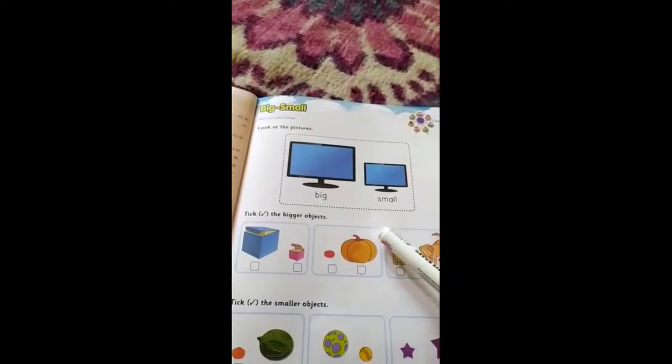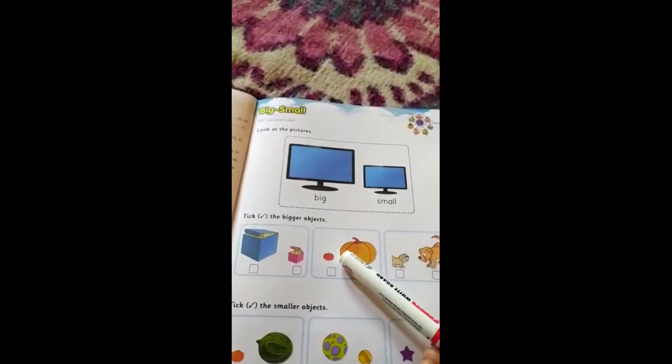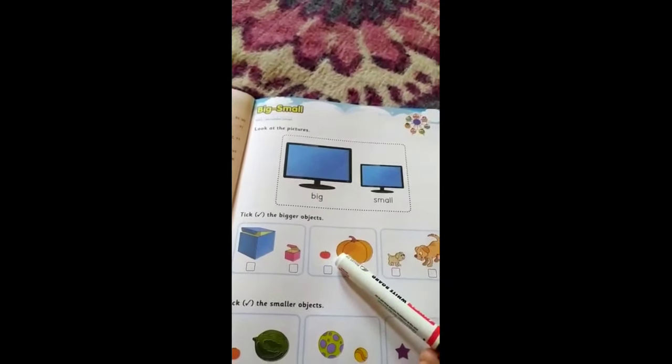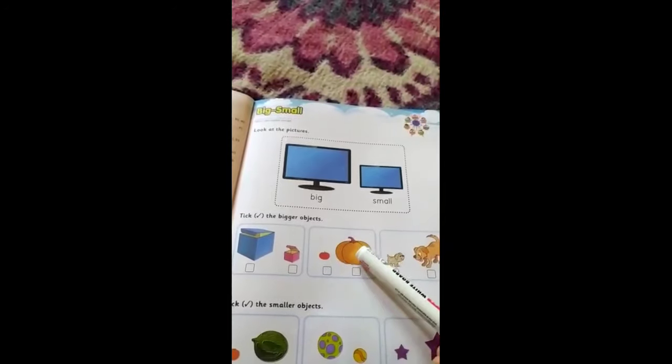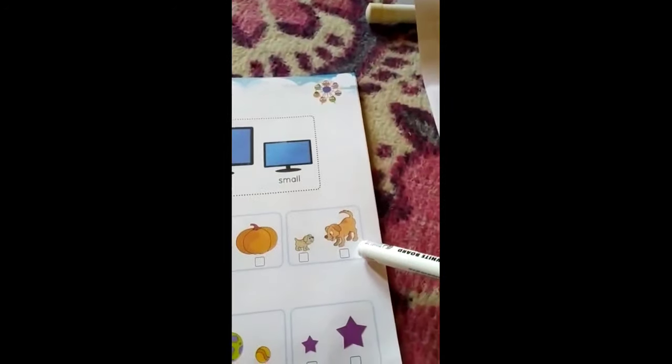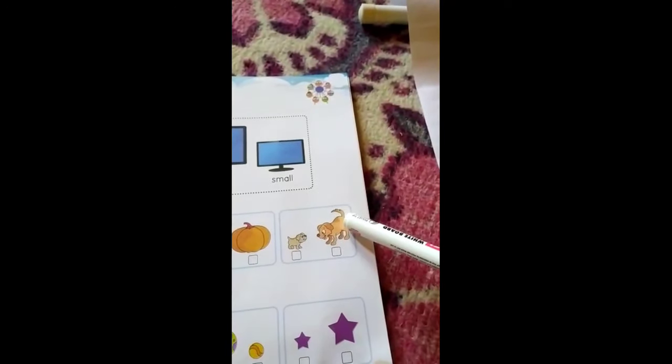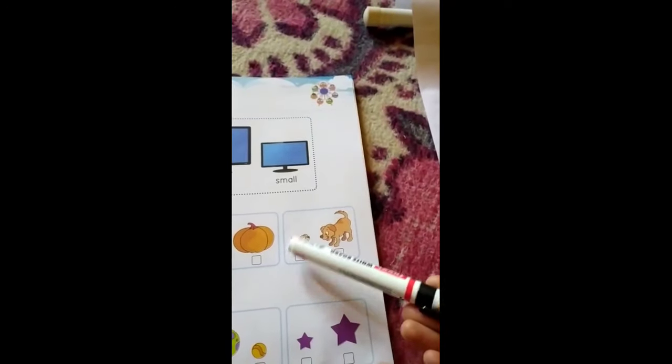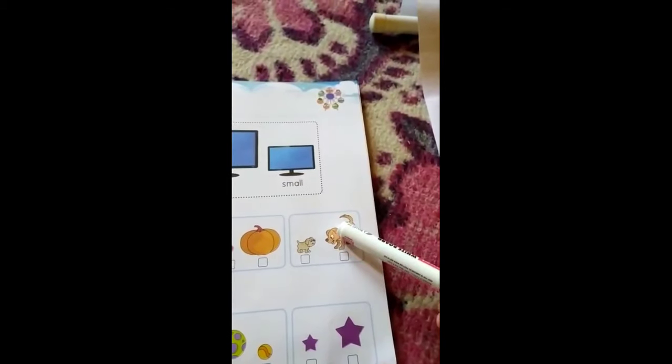Same is here. This is a dog and this is a puppy. We can say that dog is big and puppy is small. So when we compare two things on the basis of their size, we get big and small.